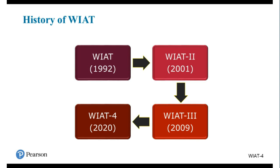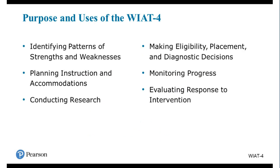Before I talk about the makeup of the WIAT-4, I want to take a brief look back at the beginning of the Wechsler Individual Achievement Test in 1992. When we published the WIAT in 1992, it was designed for students from kindergarten through grade 12, and consisted of eight subtests developed to identify areas required for classification of specific learning disability. In 2001, we published the WIAT-2, which consisted of nine subtests. Then in 2009, we published the WIAT-3, which consists of 16 subtests. And the WIAT-4, which we'll publish this year, will consist of 20 subtests.